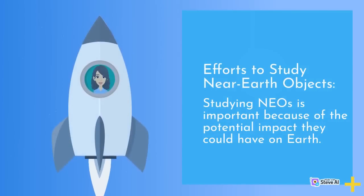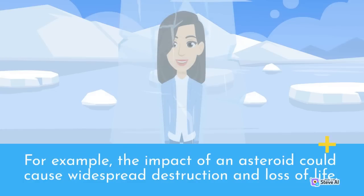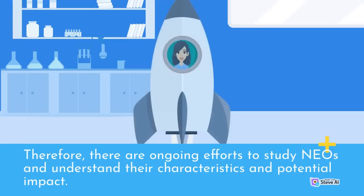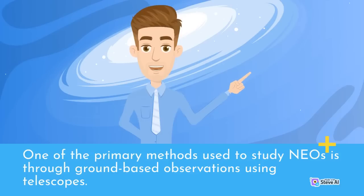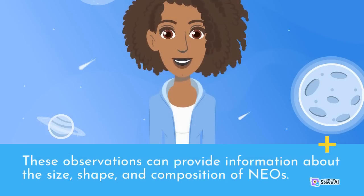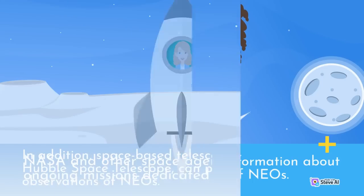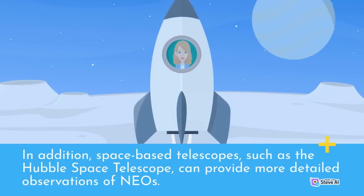Studying NEOs is important because of the potential impact they could have on Earth. For example, the impact of an asteroid could cause widespread destruction and loss of life. Therefore, there are ongoing efforts to study NEOs and understand their characteristics and potential impact. One primary method is ground-based observations using telescopes, which can provide information about the size, shape, and composition of NEOs. In addition, space-based telescopes, such as the Hubble Space Telescope, can provide more detailed observations.